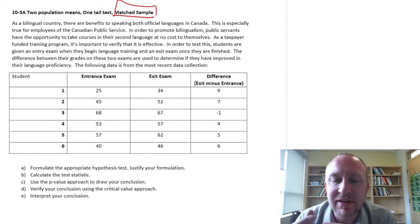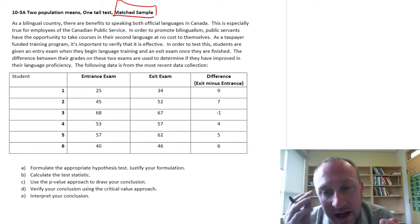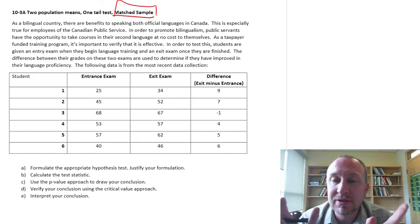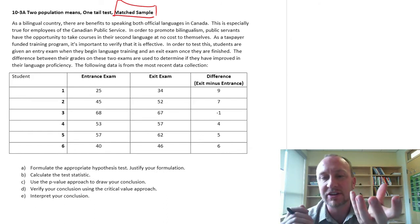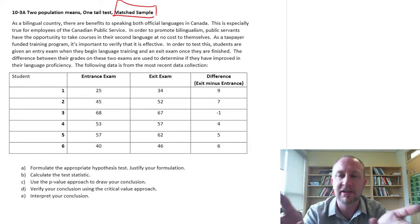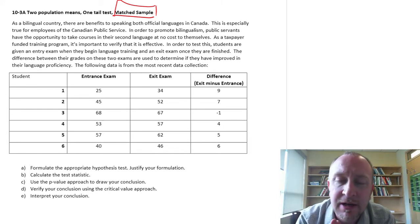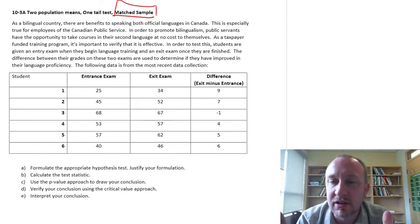In the previous exercises that we've done, when we're looking at two populations and we have two samples, in those cases we have had two completely independent samples that were taken. We calculate their means and test for a difference in those means.